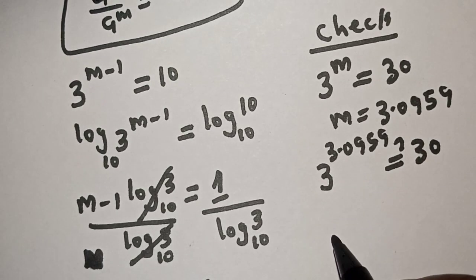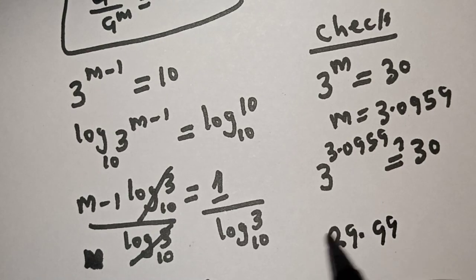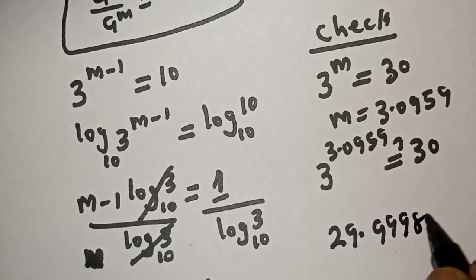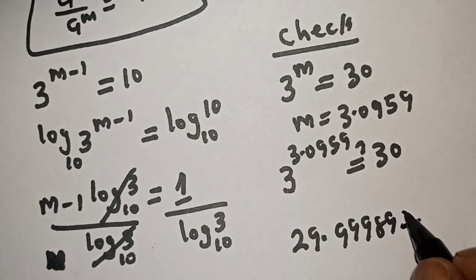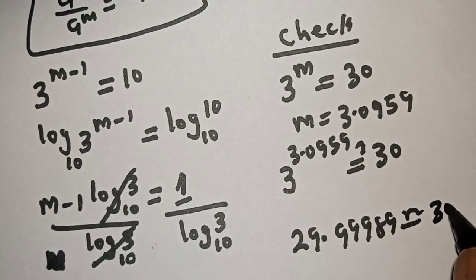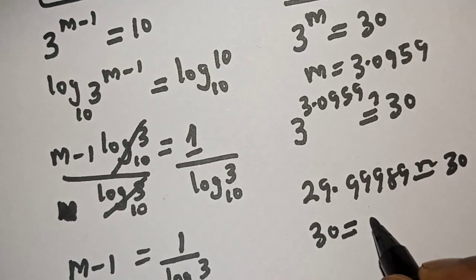This is equal to 29.9989. Then this is approximately equal to 30. Therefore, the left hand side, 30, is equal to the right hand side.